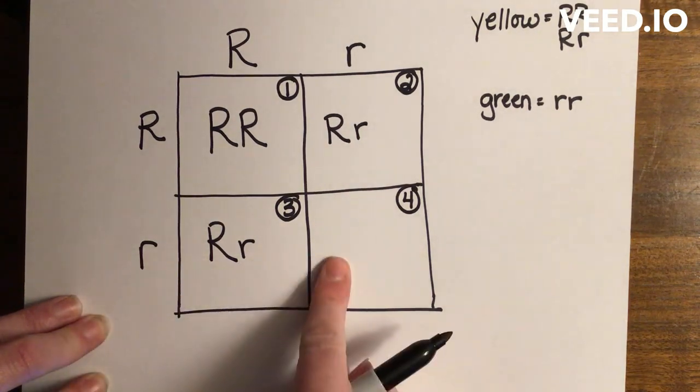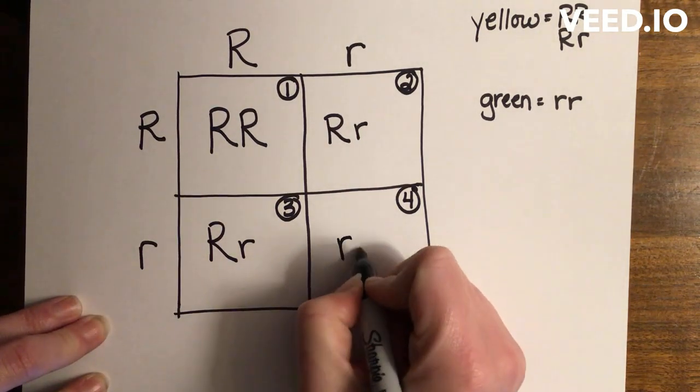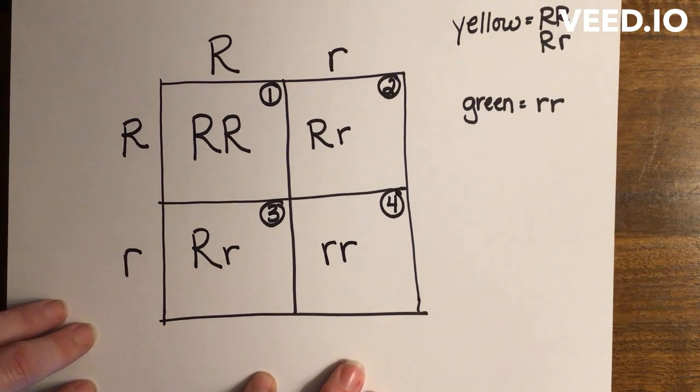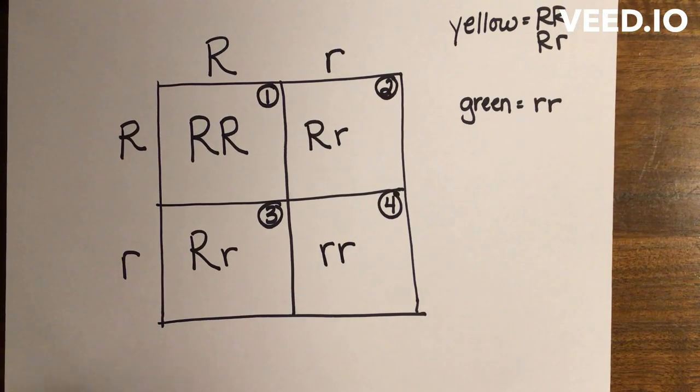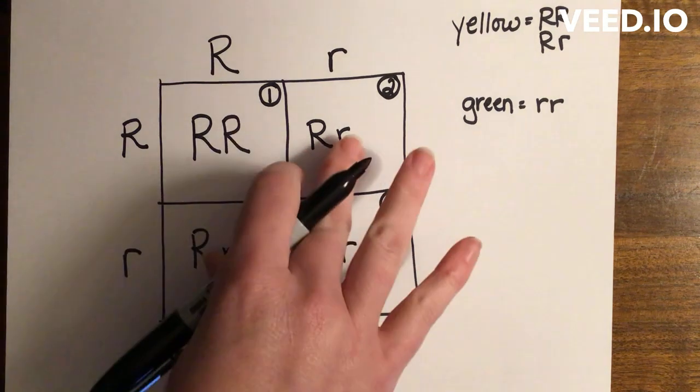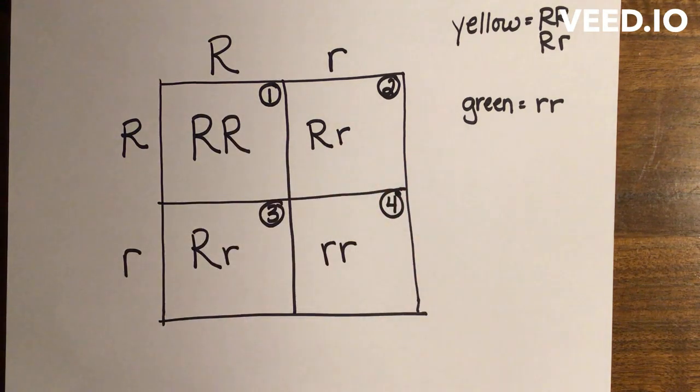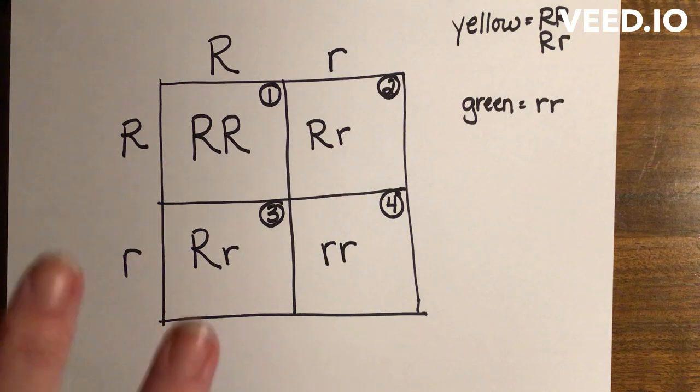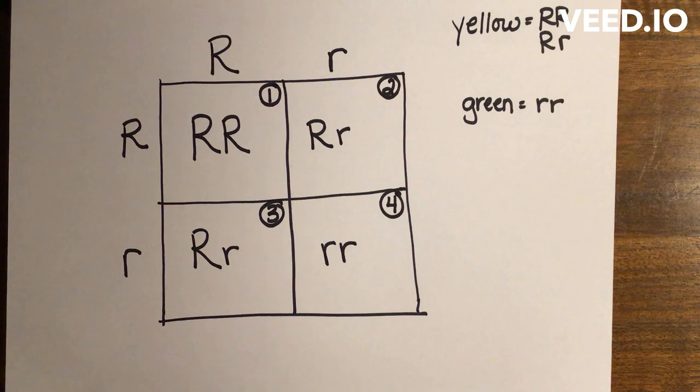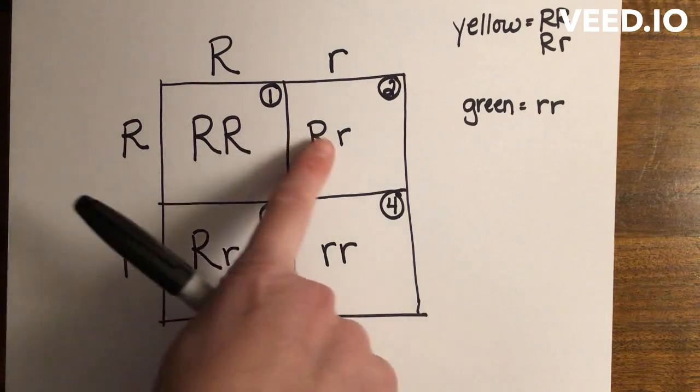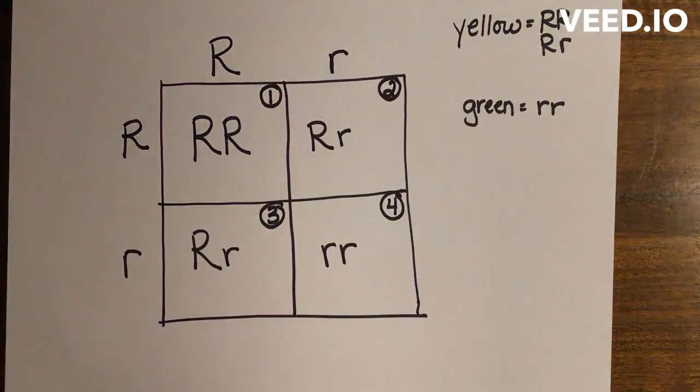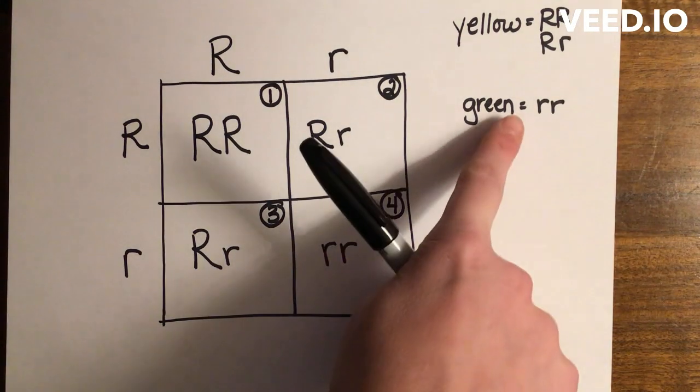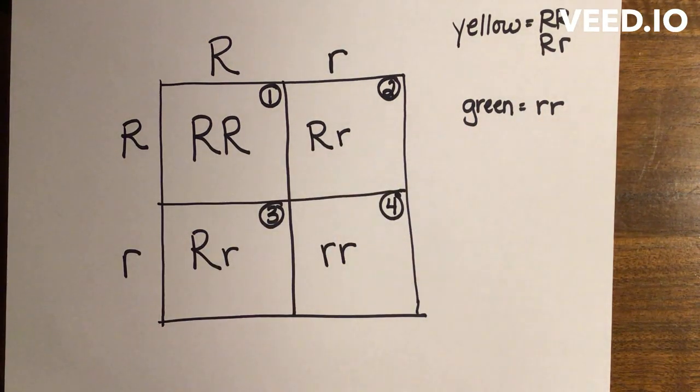So these are my results. Now remember, this doesn't mean that if you have four offspring, one will be this, two will be this, and one will be this. These are chances. So if I cross these two parent plants, I have a chance of having 75 percent yellow and 25 percent chance of having green. Doesn't mean it will happen perfectly that way. That's our probability.